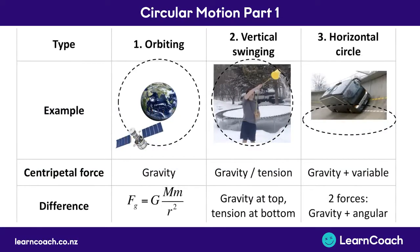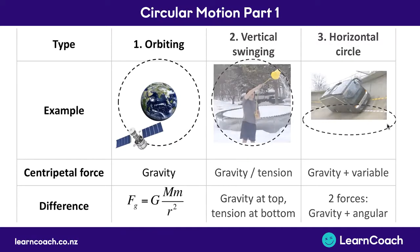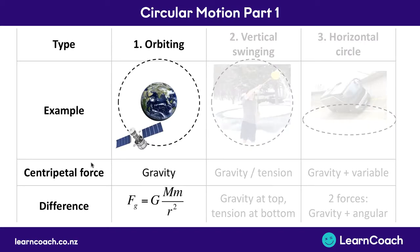In your level 3 exams you might get one of three kinds of circular motion questions: something that orbits, for example a satellite orbiting the Earth; something swinging vertically like a bucket on a rope; or a horizontal circle, like a bus driving around a circular track. They all have different centripetal forces and slight differences we need to know. Each circular motion video covers one of these three things, and in part one we're focusing on orbiting.